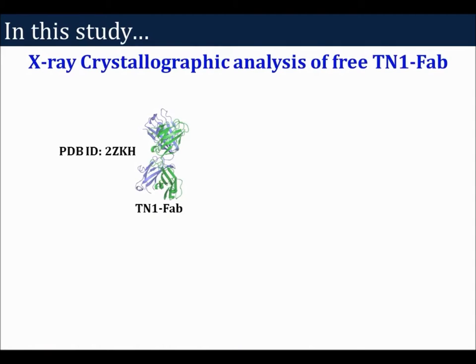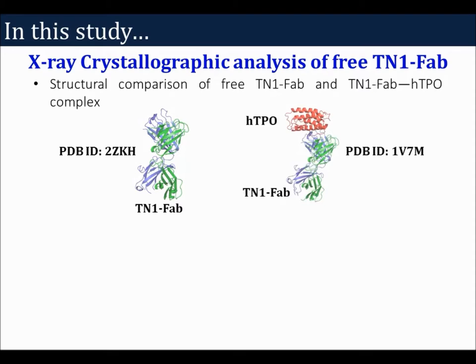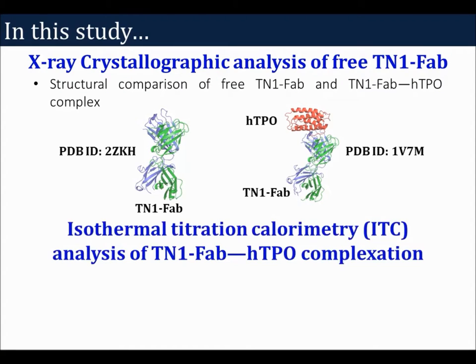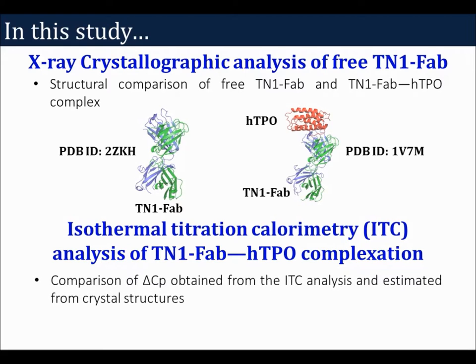In this study, we performed X-ray crystallographic analysis of free TN1-FAB. In order to clarify the HTPO recognition mechanism of TN1 antibody, the determined structure of free TN1-FAB was compared with the HTPO-bound form of TN1-FAB. Isothermal titration calorimetry analysis of TN1-FAB and HTPO complexation was also performed. In order to clarify the effect of TN1-FAB binding on the physicochemical properties of HTPO, the ΔCP obtained from the ITC analysis was compared with that estimated from crystal structures.